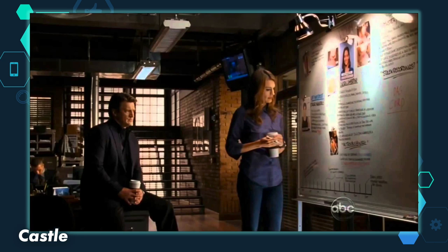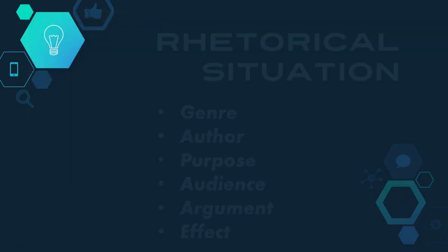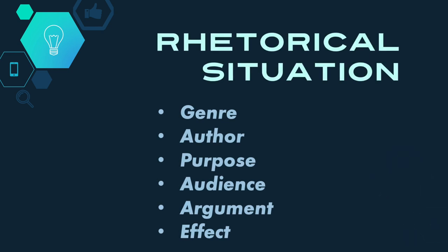As you analyze visual media, remember that just like with textual rhetoric, the same elements of the rhetorical situation apply: genre, author, purpose, audience, argument, and effect. Like in the examples from film and TV that I showed you, these aspects of the visual text help us identify the rhetorical impact of the text. And when they're combined with imagery that evokes an appeal to ethos, pathos, or logos, we can then start to parse the persuasive argument that visual texts make.